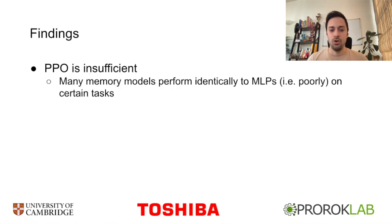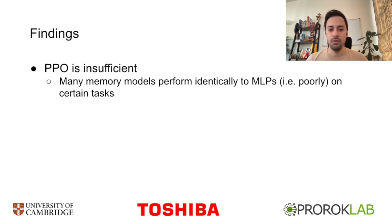Finally, we found that on certain tasks, memory models converge to the same reward as the MLP, suggesting that it may not be the model that's the problem, but perhaps the learning algorithm itself. Future work could look at PPO and suggest tweaks to improve its performance on POMDPs.